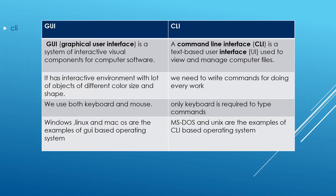Now let's understand the difference between GUI and CLI. GUI is a system of interactive visual components for computer software, while CLI is a text-based user interface. In GUI we have a very interactive environment with colorful pictures of different shapes and sizes, whereas in CLI we have to write commands for every task. In GUI we have both keyboard and mouse; in CLI only the keyboard is required. GUI is very easy to work with, while CLI is a bit difficult because we have to learn the commands. Examples of GUI are Windows, Linux, and macOS; examples of CLI are MS-DOS and UNIX.